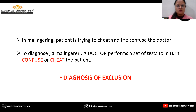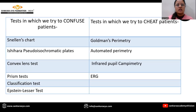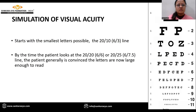To diagnose a malingerer, a doctor performs a set of tests in turn to confuse or cheat the patient. It remains a diagnosis of exclusion. Tests in which we try to confuse the patient include sense test, Ishihara pseudo-isochromatic plates, convex lens test, prism test, classification test of color hues, Epstein laser test, etc. Tests in which we try to cheat the patient include Goldman perimetry, automated perimetry, infrared pupil campimetry, ERG, etc.